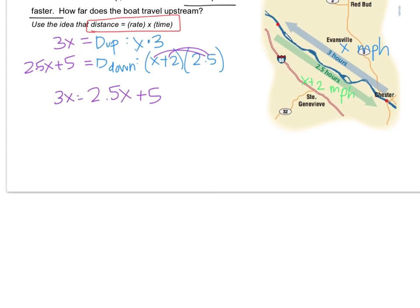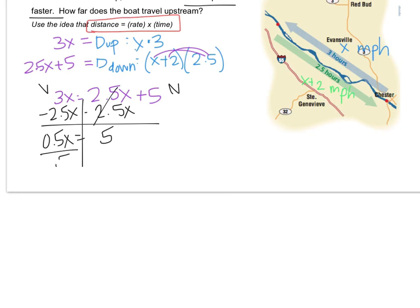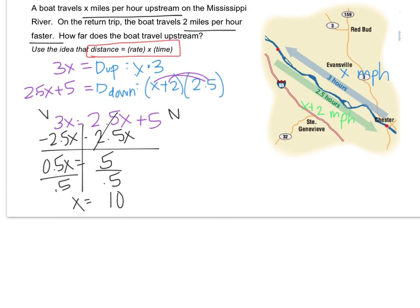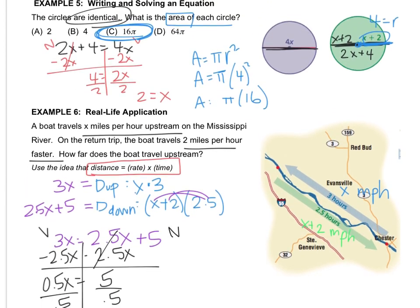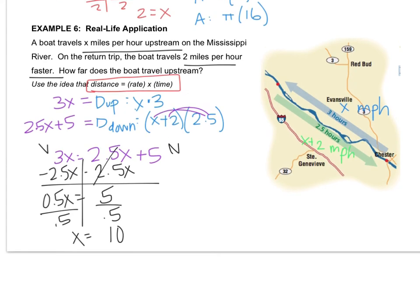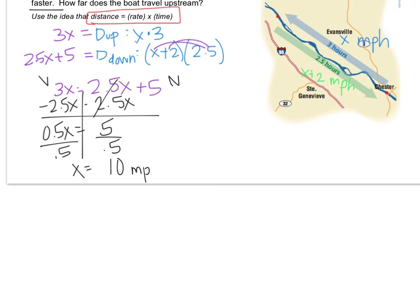The distance one way is the same as the distance the other. The only reason it took less time is because the boat went faster. Drop a line down the equal sign — variables on the left, numbers on the right. I have to move the 2.5x. So I get 0.5x equals 5, divide by 0.5, and that's x equals 10. The question asks how far the boat travels upstream, so the distance up is 3 times 10, which is 30 miles.